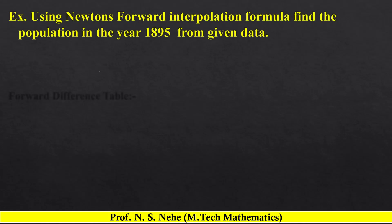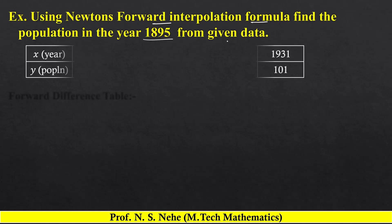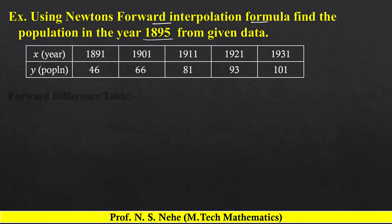Hello. The question is: using Newton's forward interpolation formula, find the population in the year 1895 from the following data. The x values (years) are 1891, 1901, 1911, 1921, 1931, and the corresponding population values y are 46, 66, 81, 93, and 101.